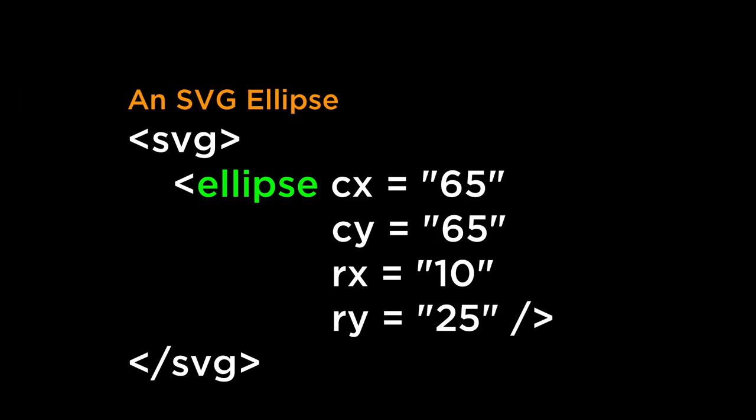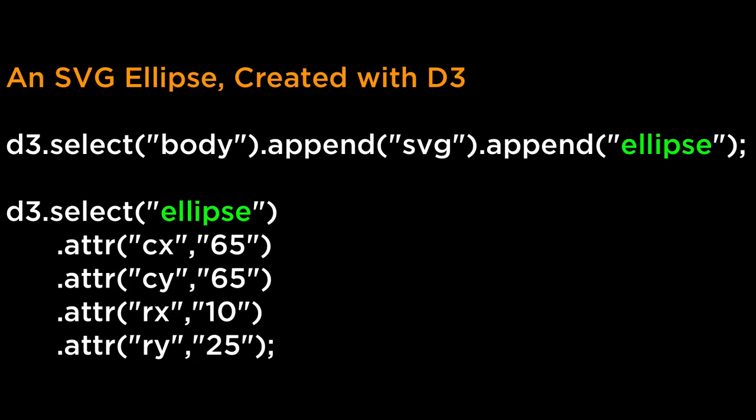The SVG Ellipse takes in four main inputs: the CX and CY, which is where the center of the ellipse is drawn from, and the X radius and Y radius of the ellipse. With D3, we can append an SVG container and then append the SVG Ellipse Basic Shape, then define the attributes of the ellipse to have it appear on the screen. Each of these attributes can be transitioned as it is a number, and one other aspect that can be transitioned is the color fill.